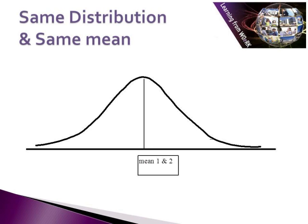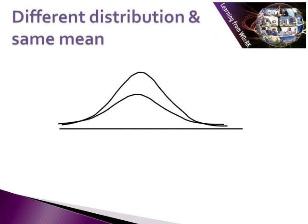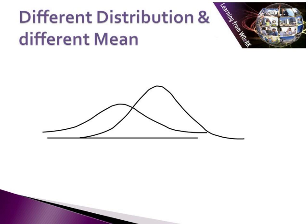We can see what we mean by same distribution and same mean — the curves look exactly the same. In the second example, we have exactly the same distribution shape but a different mean, so the curves are not superimposed on each other. In the third example, the groups share the same mean and are superimposed, but the shape of the distribution differs — one is flatter than the other. In the fourth example, we have both a different distribution and a different mean, so one is flatter, one is more peaked, and the means are in different positions.